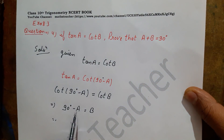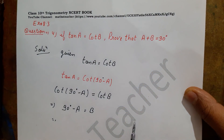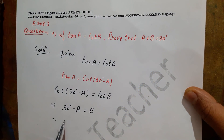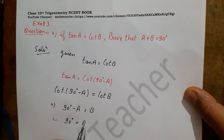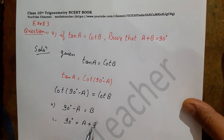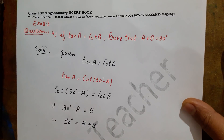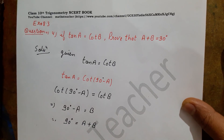Now we have to prove that A plus B equals 90°. So we transfer the negative A to the other side, giving us: 90° equals A plus B. Hence proved.